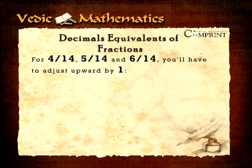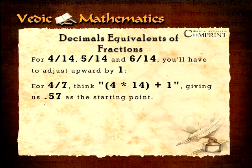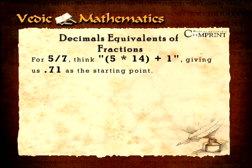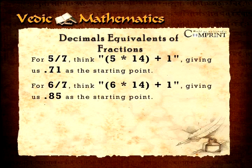For four by fourteen, five by fourteen, and six by fourteen, you will have to adjust upward by one. For four by seven, think four multiplied by fourteen plus one, giving us point five-seven as the starting point. For five by seven, think five multiplied by fourteen plus one, giving us point seven-one as the starting point. For six by seven, think six multiplied by fourteen plus one, giving us point eight-five as the starting point.